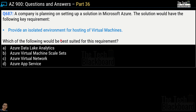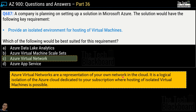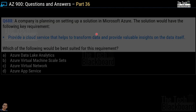Question number 687: a company is planning to set up a solution in Microsoft Azure with the requirement to provide an isolated environment for hosting virtual machines. Options are Azure Data Lake Analytics, Azure Virtual Machine Scale Sets, Azure Virtual Network, and Azure App Service. The correct answer is Option C, Azure Virtual Network. Azure Virtual Network is a representation of your own network in the cloud — a logical isolation of Azure cloud dedicated to your subscription where hosting of isolated virtual machines is possible.